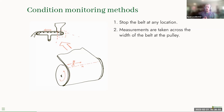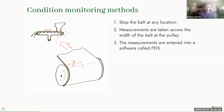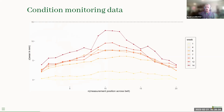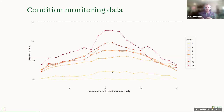They take measurements at N locations, and depending on the width of the belt this number can vary. That data is entered into a maintenance management software like PDS where they perform analysis. An engineer will go into PDS and look at all the historic measurements. On the vertical axis we have wear in millimeters, and on the horizontal axis we have measurement location across the belt — 20 measurement locations for this particular belt.